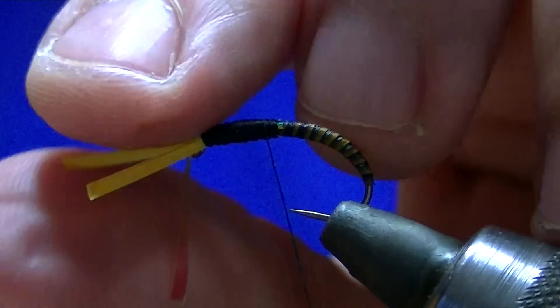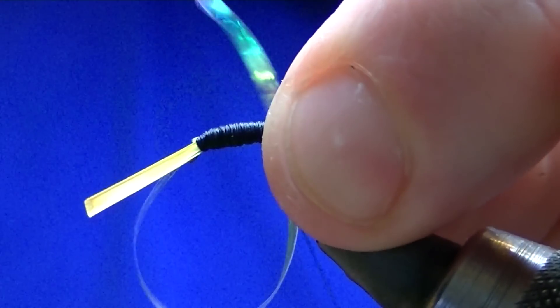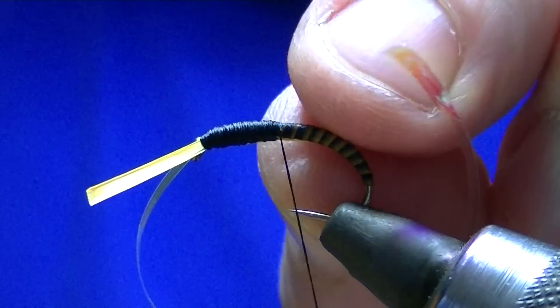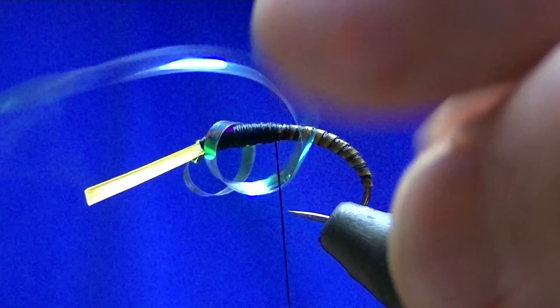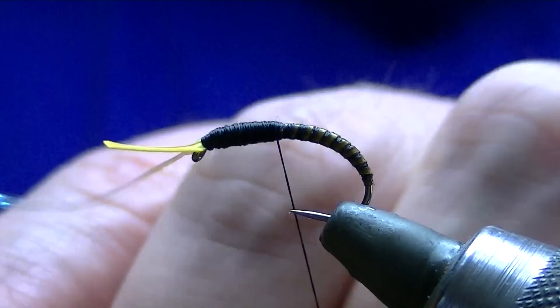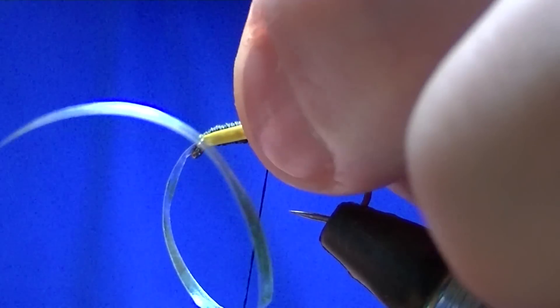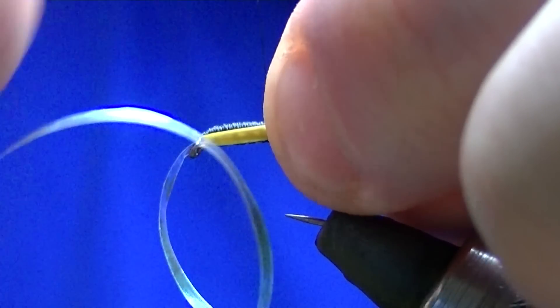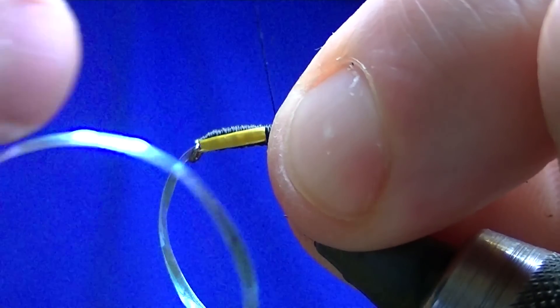What I'm now going to do is put one biot down one side, catch it in. Then I'll just rip that bit off. And then we'll put the other biot down this side, and then we'll just rip that bit off. And then tidy it up.